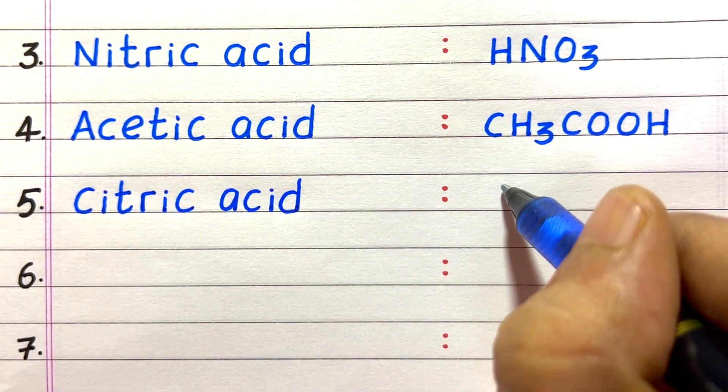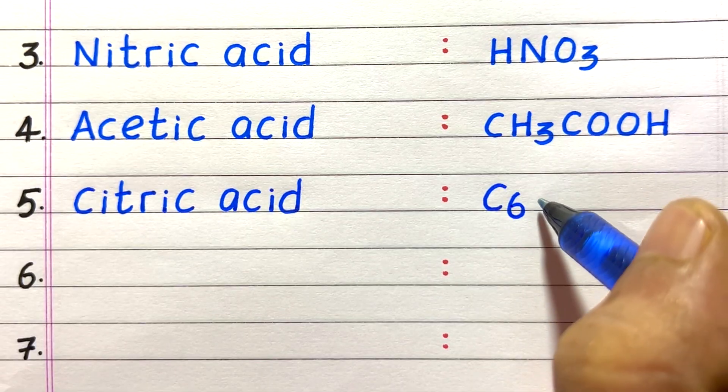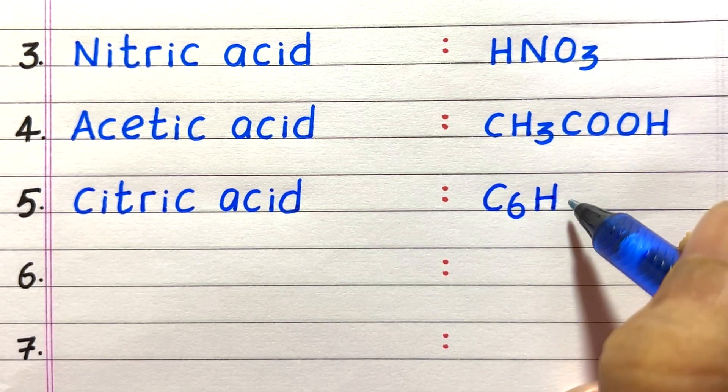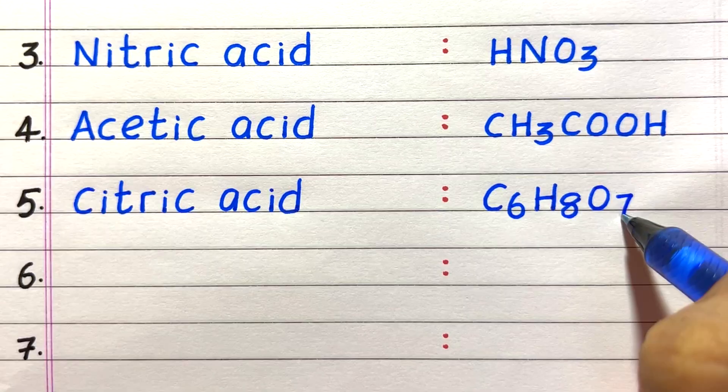Fifth name of acid is citric acid. Formula C6H8O7.